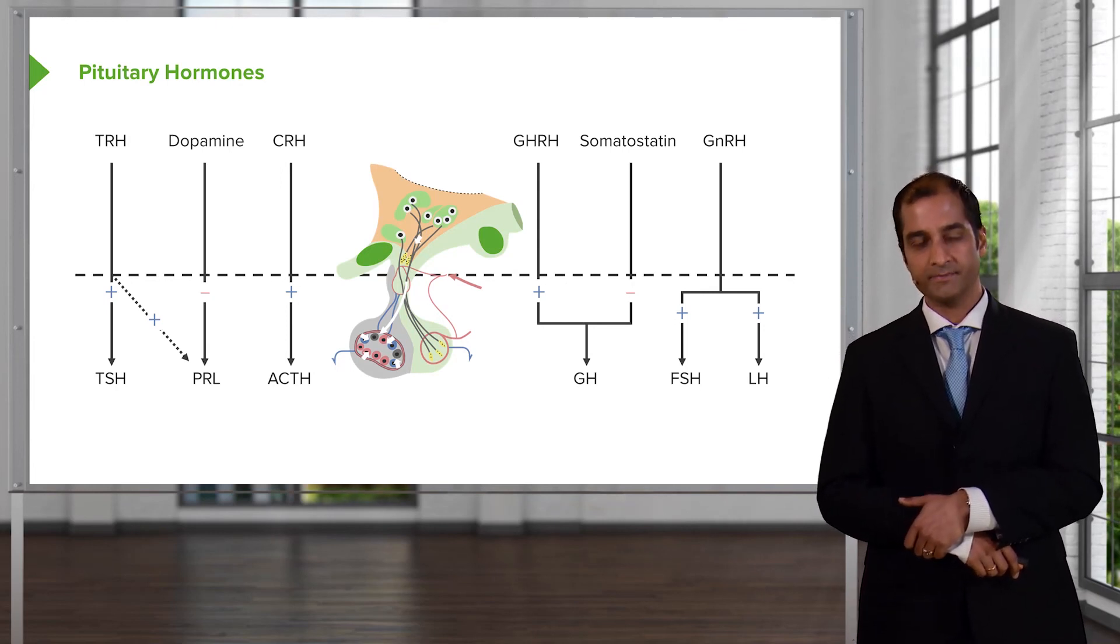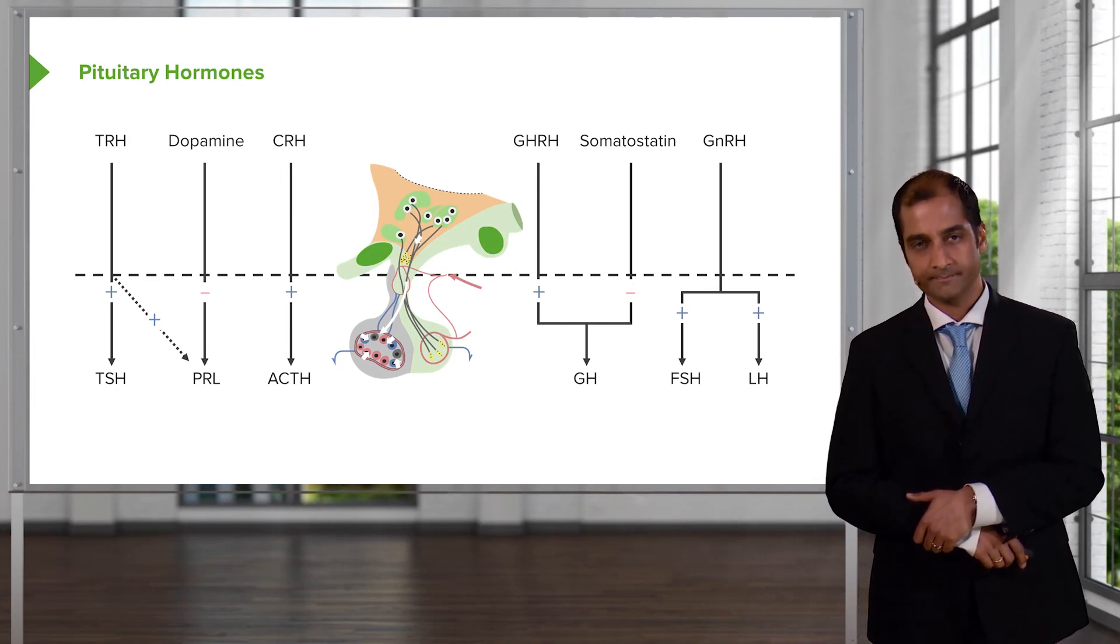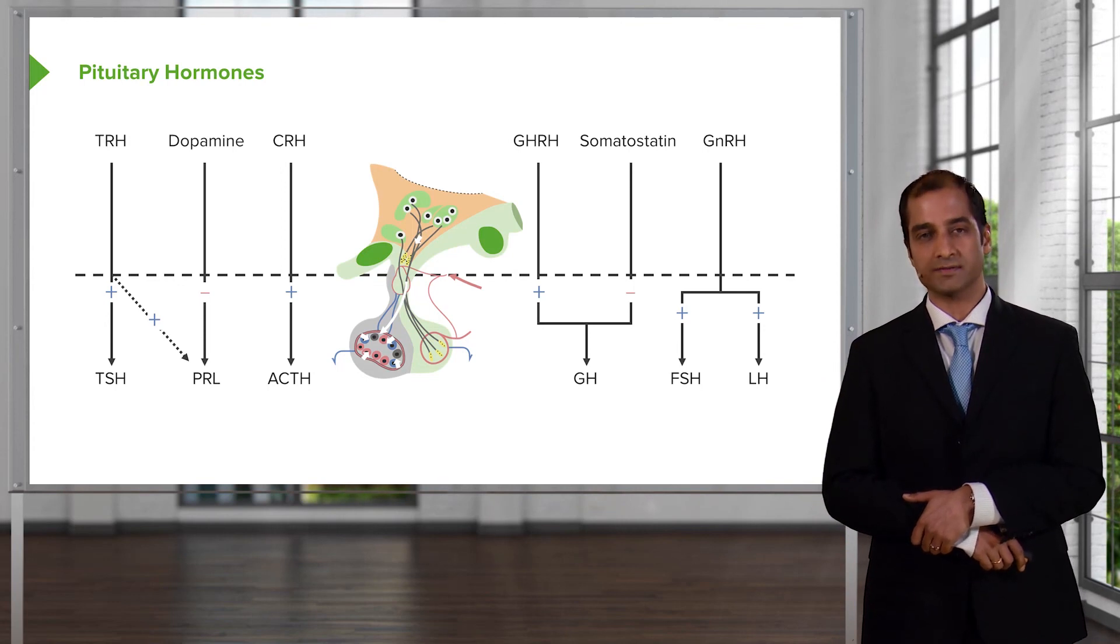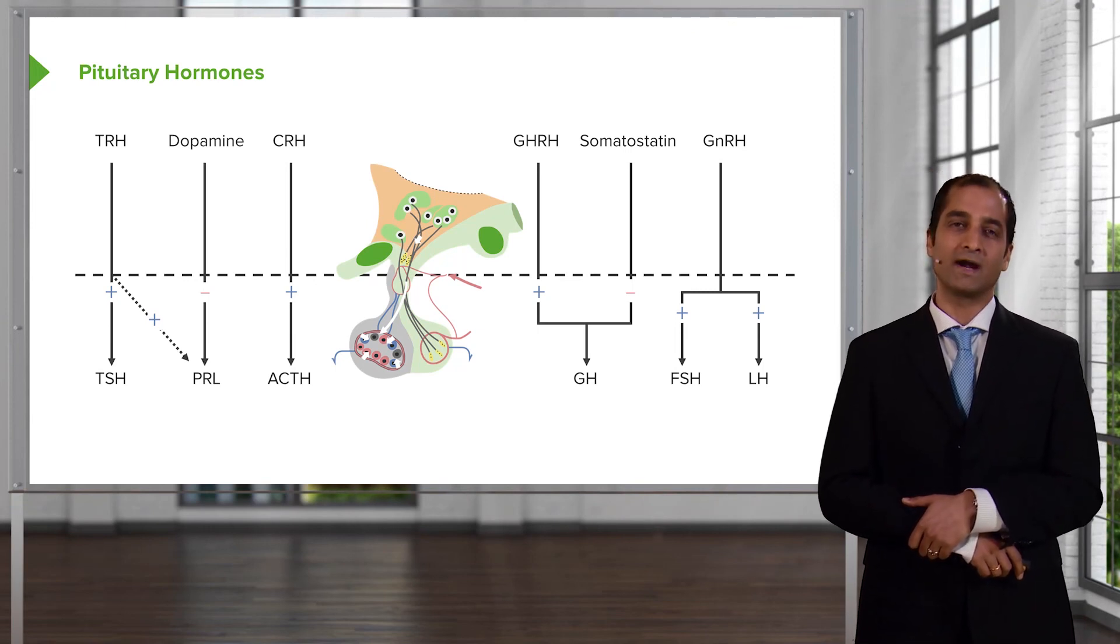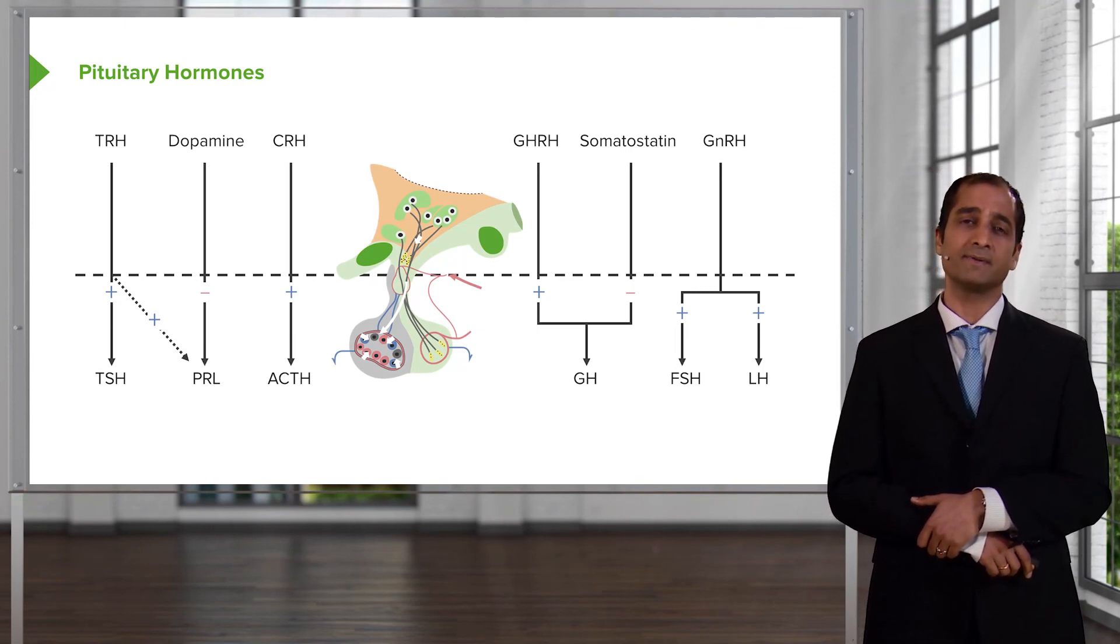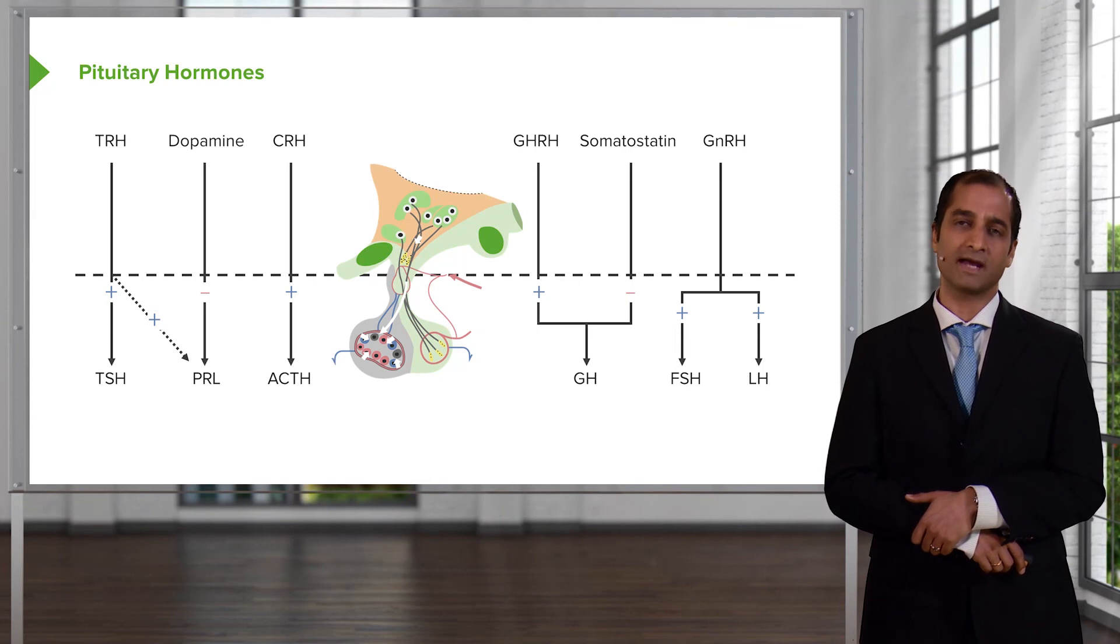Now, if TRH releases prolactin, dopamine inhibits it. And that is a huge topic for us when we get into that particular pathway of dopamine regulating the release of prolactin. But it inhibits the release of prolactin. It must be understood at this point in time.